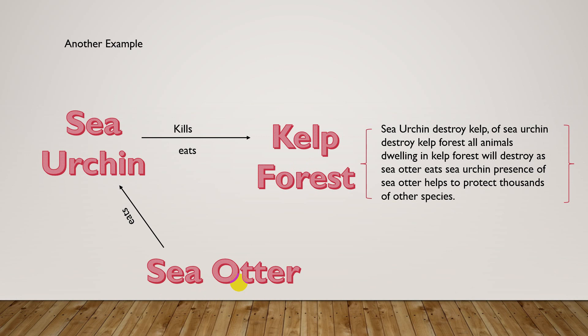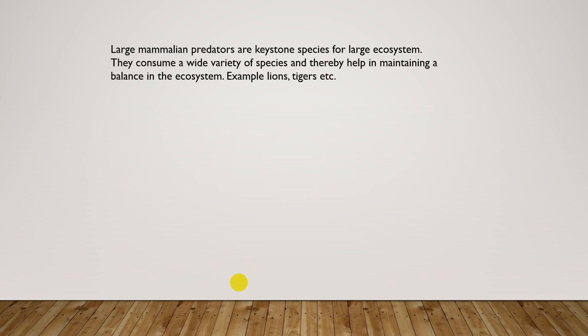The sea otter plays a crucial role in balancing the ocean ecosystem, making it a keystone species. Large mammalian predators are also keystone species for large ecosystems — they consume a wide variety of species, thereby helping to maintain balance. Examples include lions and tigers. Their numbers may be less, but their importance in the ecosystem is very significant.